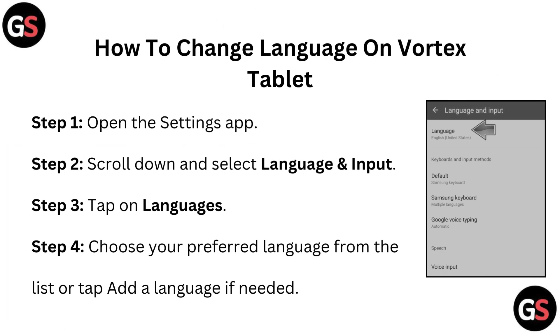Step 1: Open the settings app. Step 2: Scroll down and select language and input.